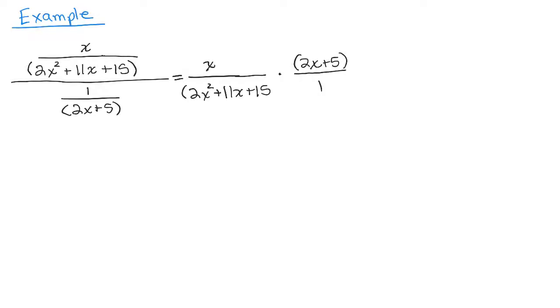So I notice I have a quadratic here. What I'm hoping is that maybe if I factor it, it's going to cancel that 2X plus 5. So you can use any method you want to find the factors of 2X squared plus 11X plus 15.